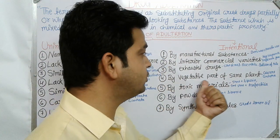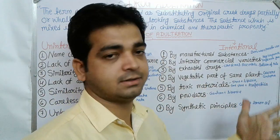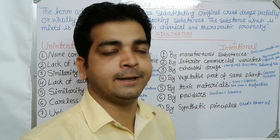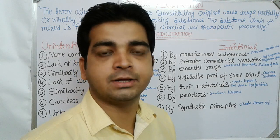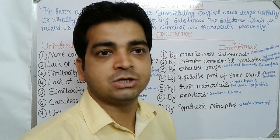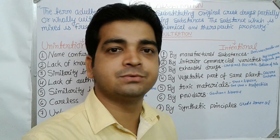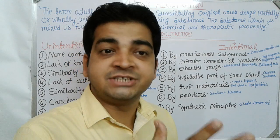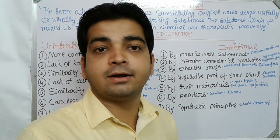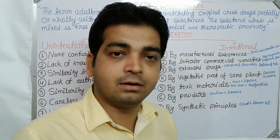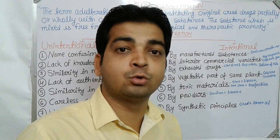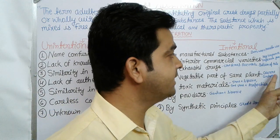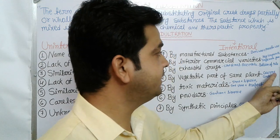The fourth type of intentional adulteration is by vegetative parts of the same plant. Sometimes when roots and branches are being used, root parts are mixed with branches and branch parts are mixed with roots. When stem bark is required, root bark and other bark types can be used as adulterants. Examples include cascara and senna, where vegetative parts are used.